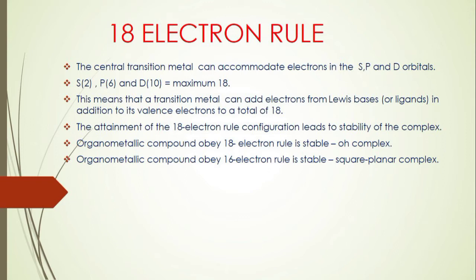A metal atom can receive electrons from ligands in addition to its own valence electrons to attain 18 electrons. The attainment of an 18-electron configuration leads to the stability of that particular complex. If it is an octahedral complex, it should obey the 18-electron rule.